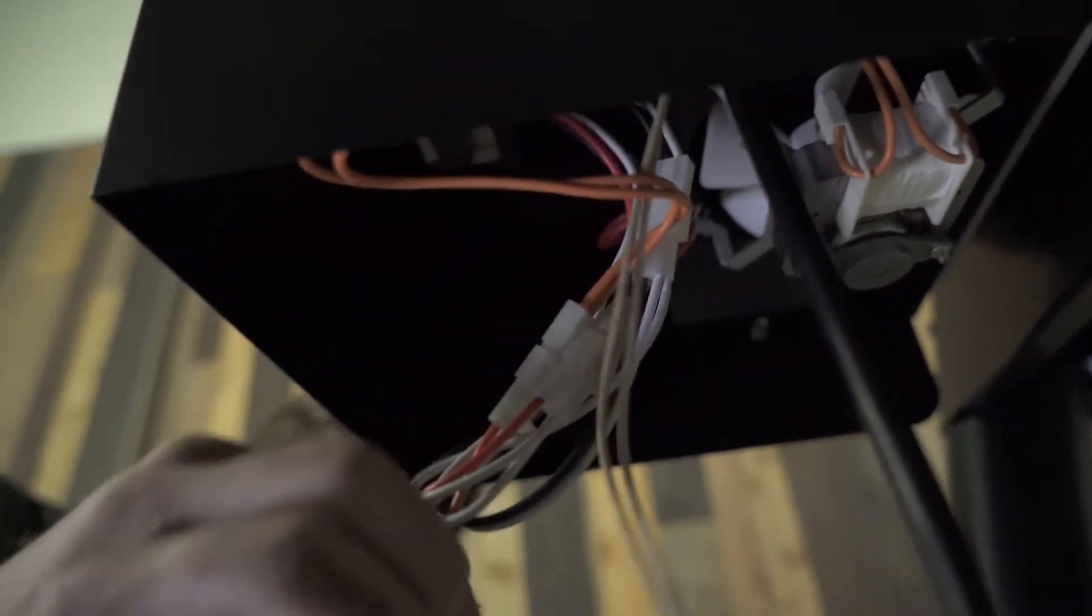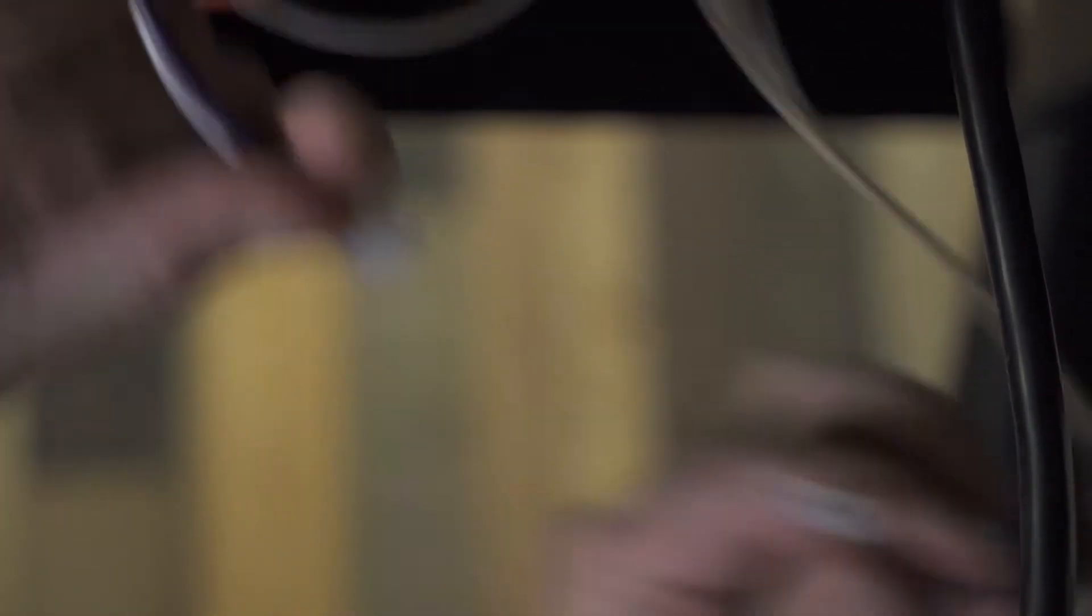Go underneath the hopper of your grill. Locate the purple wire. Unplug the Molex connector connecting those two wires together.